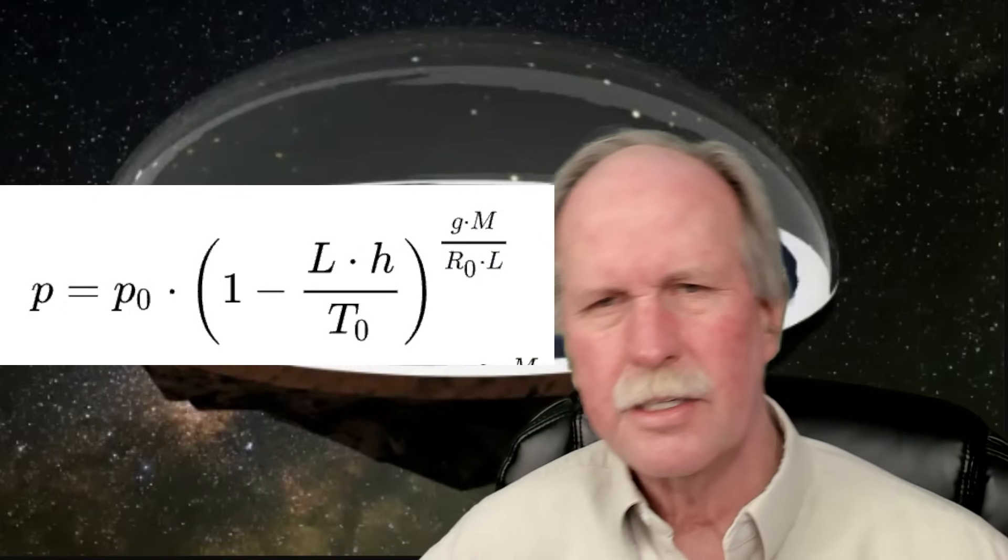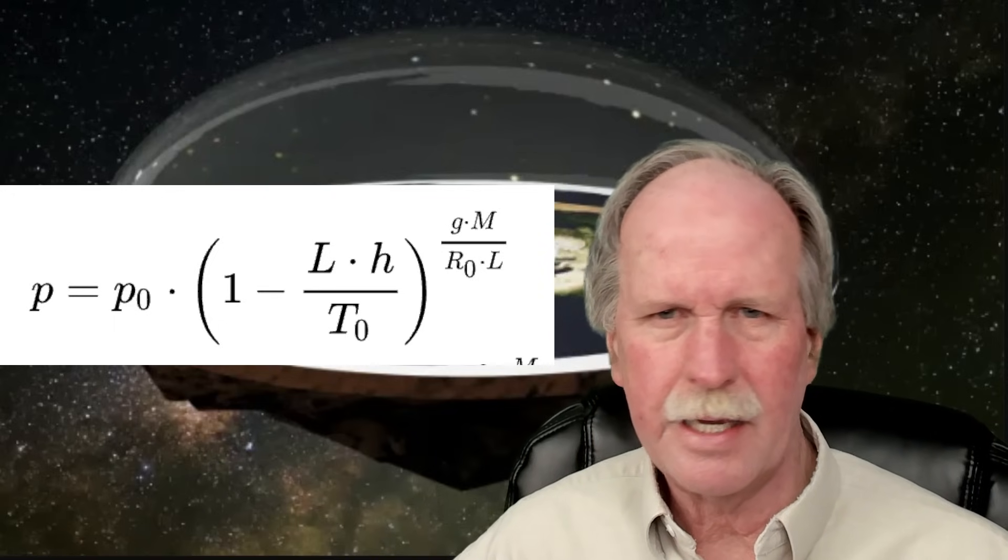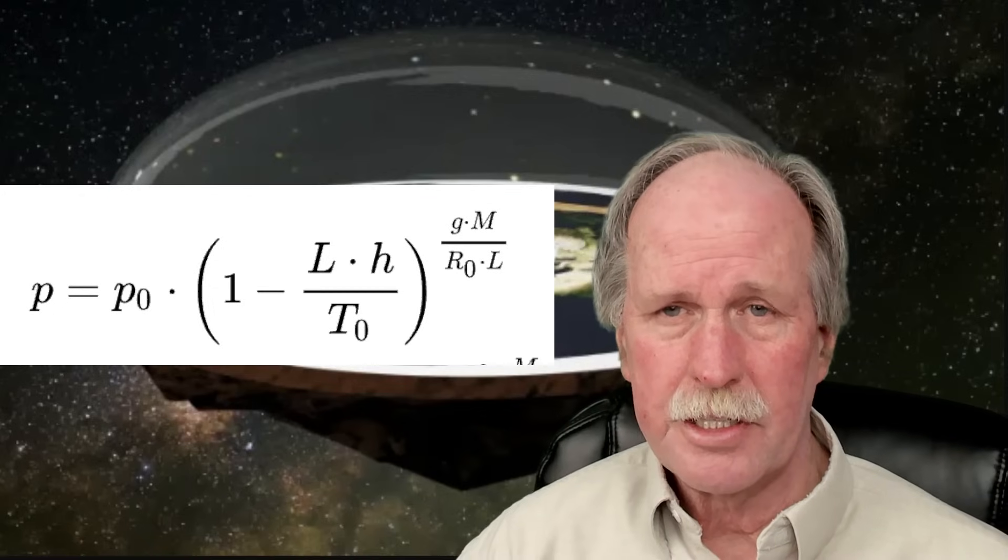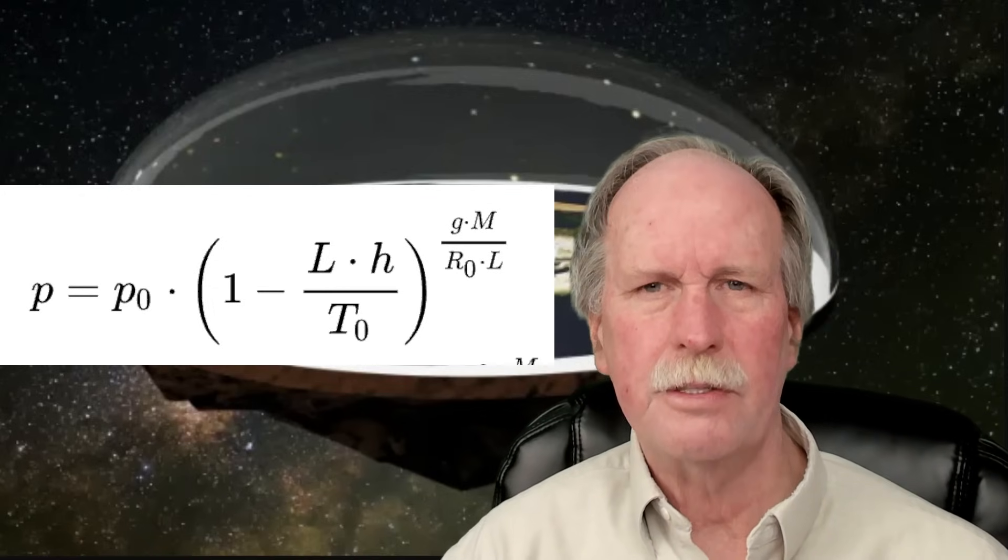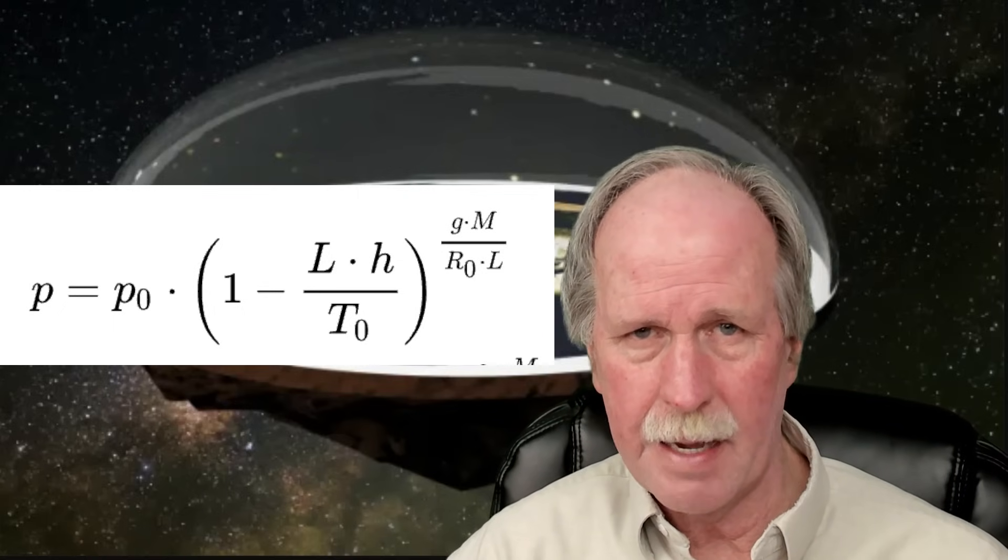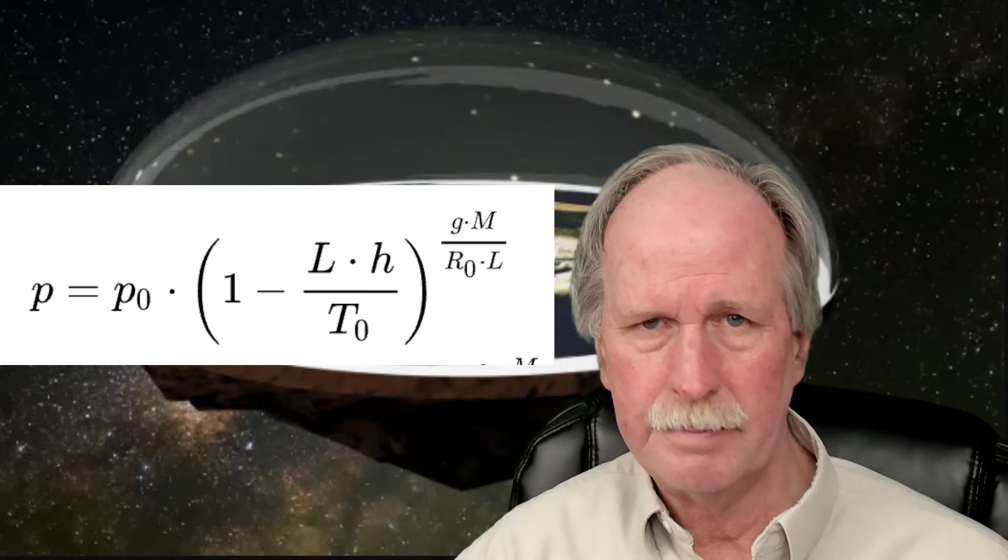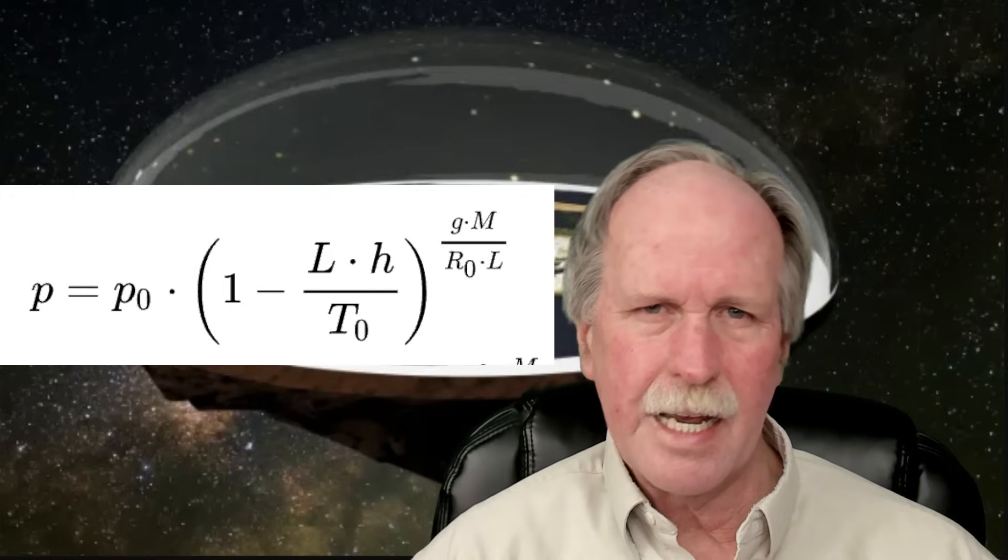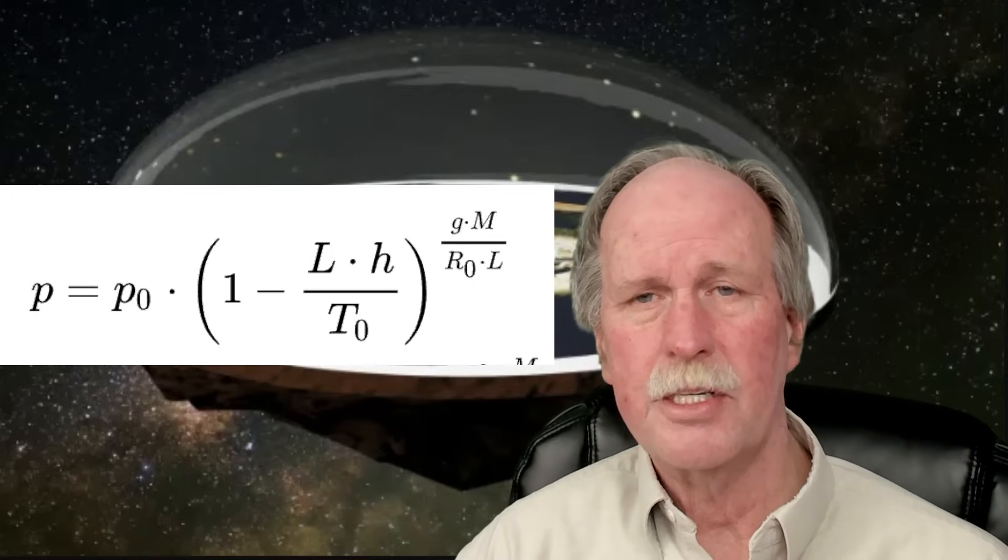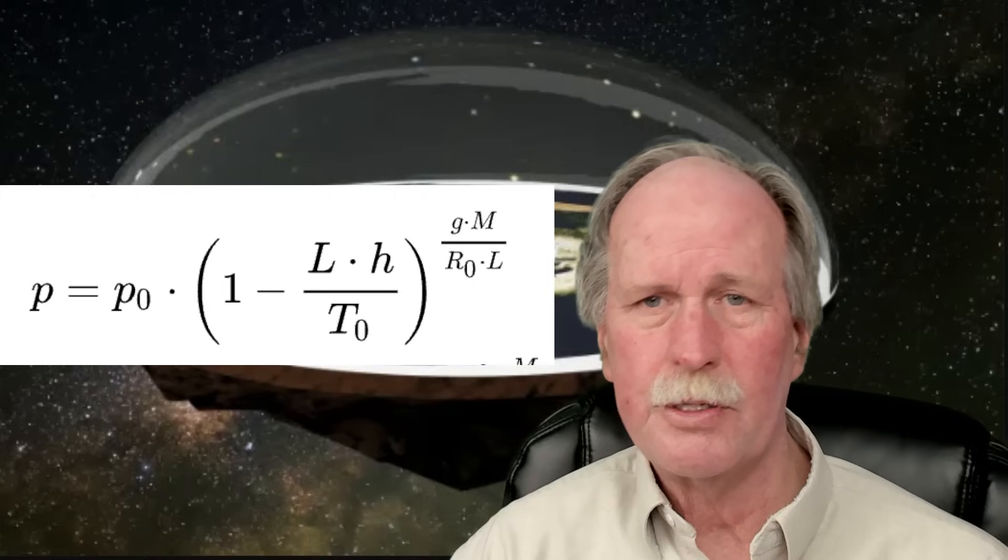Now because of these factors, we have to use another equation to predict pressure at any given altitude. We can't use the ideal gas equation. This is the equation that we can use. Let me explain the terms in this equation. The pressure P at any given altitude equals the pressure at sea level times one minus the temperature lapse rate of the atmosphere times the height above sea level in meters over the original temperature at sea level. And that value is raised to an exponent. And that exponent equals the acceleration of gravity 9.8 meters per second squared times the molar mass of dry air over the gas constant times the lapse rate of the atmosphere.